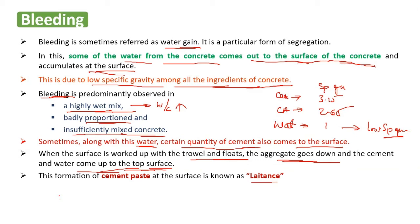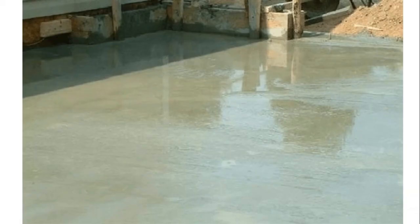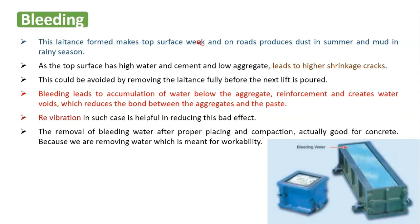This separation of water and cement from the remaining materials leads to the formation of a cement paste at the surface, which is what we call laitance. The image shows bleeding of concrete, mostly seen in slabs. The laitance forms a thin cement layer on the concrete, making the top surface weak — there is no aggregate, only cement and water. This becomes a problem in concrete pavements and roads, producing dust in summer and mud in the rainy season.